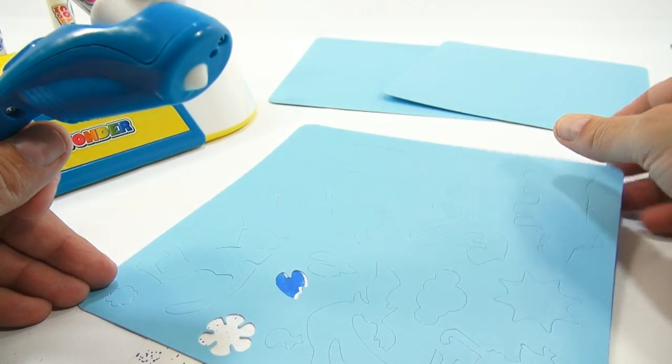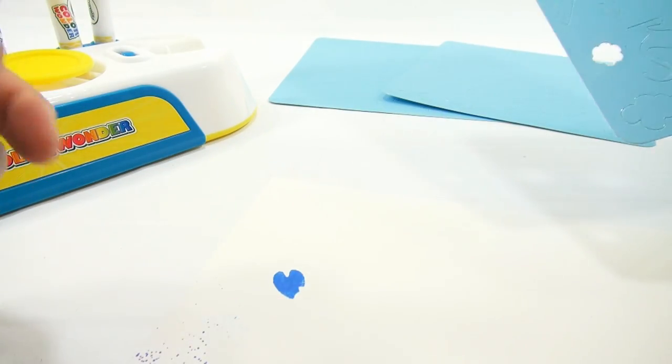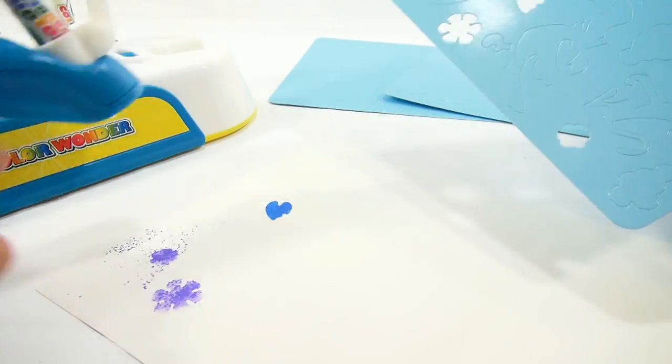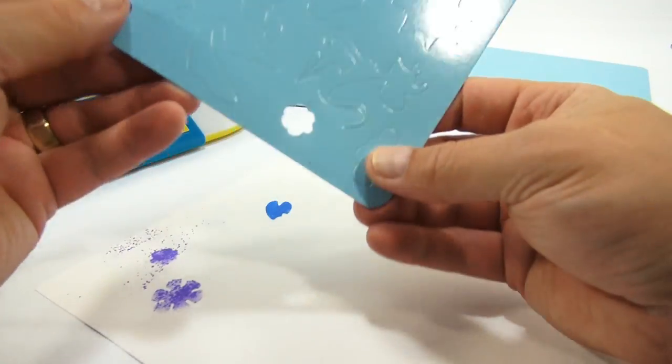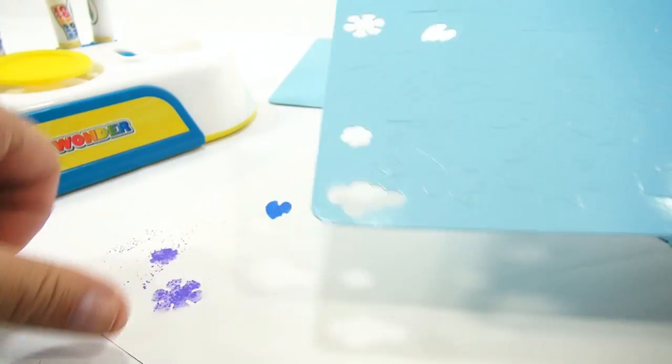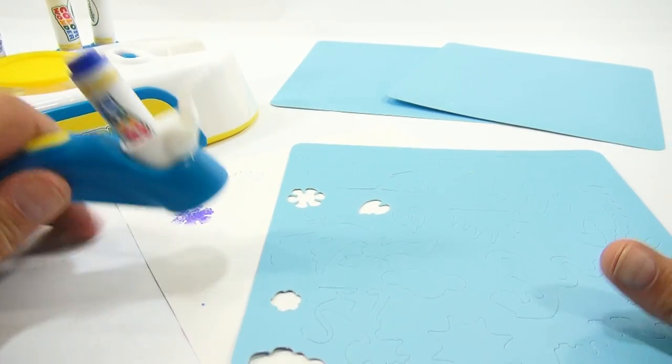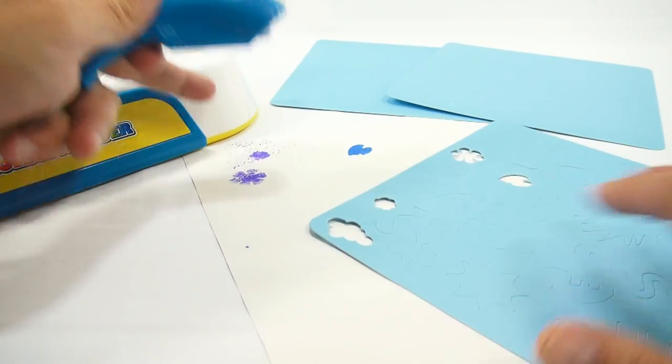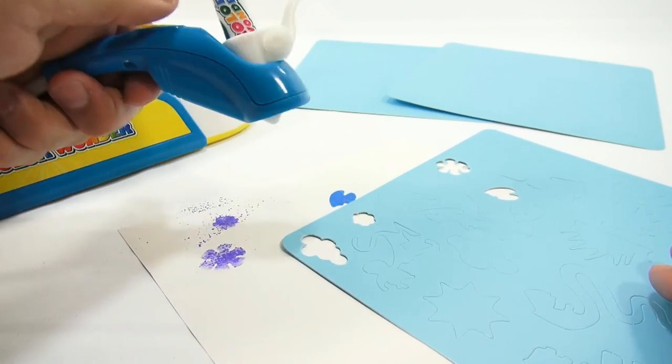So it might take a little bit to get certain markers to work correctly. Let's punch out a cloud. Since I have blue, I'll do a blue cloud instead of a blue sky. The blue seem to work better than the purple so far.